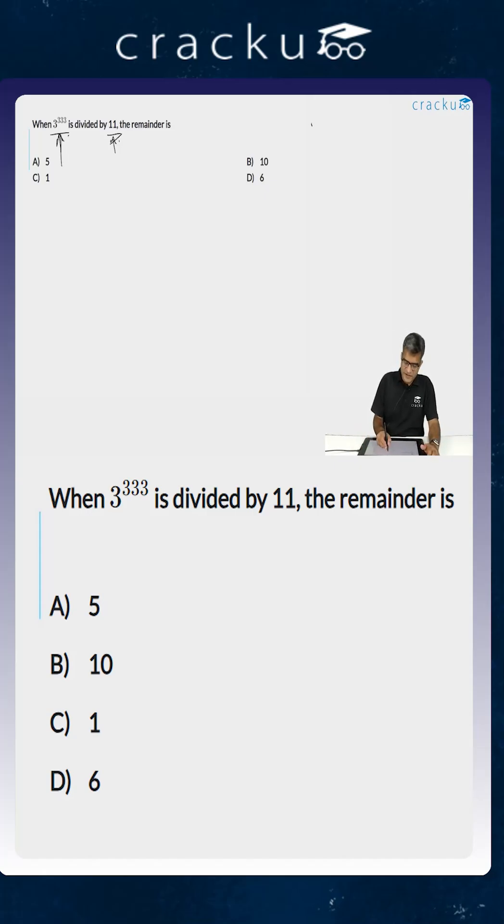For example, 3 leaves a remainder of 3 when divided by 11. 3 squared which is 9 leaves a remainder of minus 2. 3 cubed which is 27 leaves a remainder of 5 when divided by 11. 3 to the power 4 is 81, this leaves a remainder of 4 when divided by 11, and 3 to the power 5 is 243.